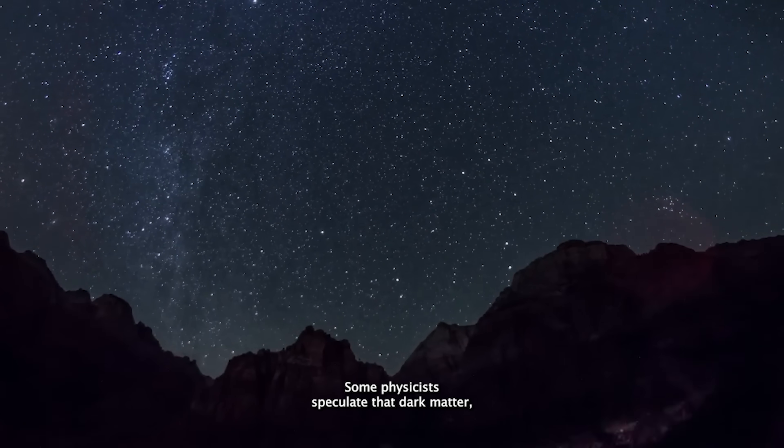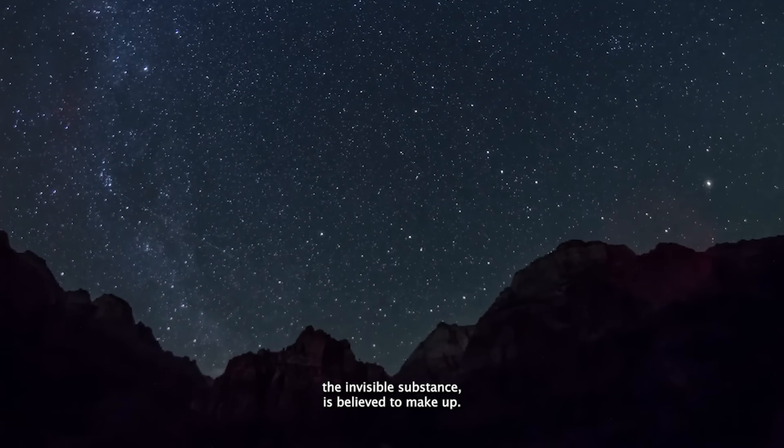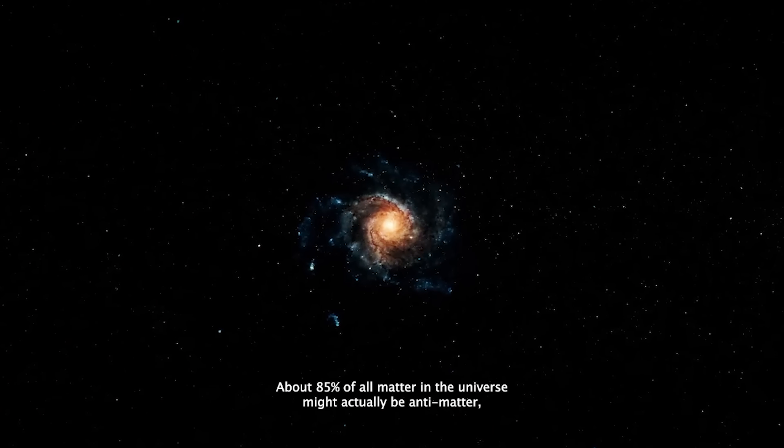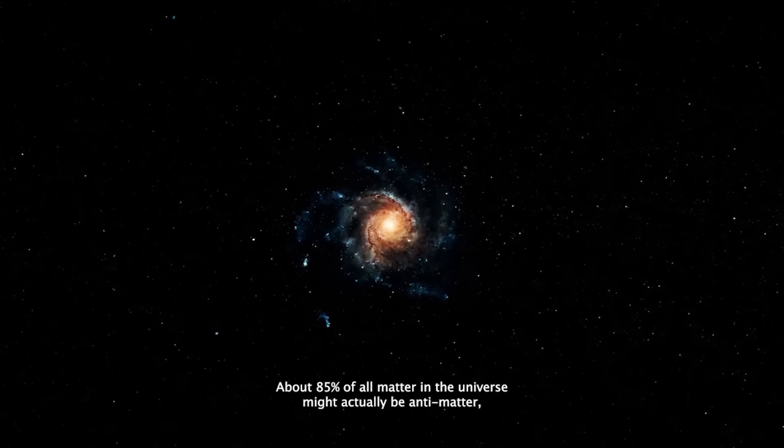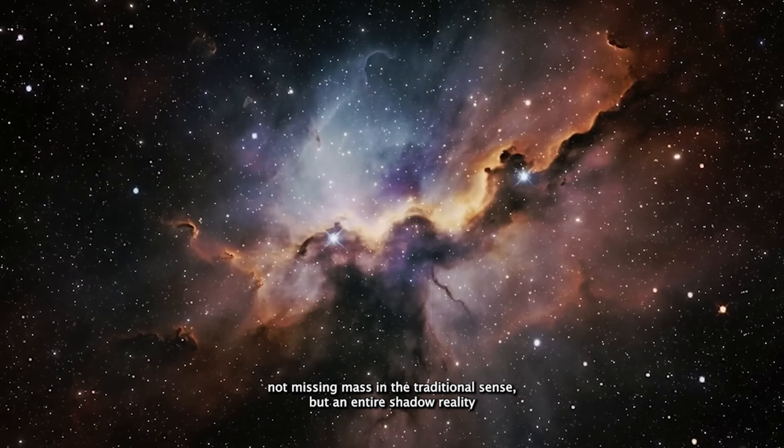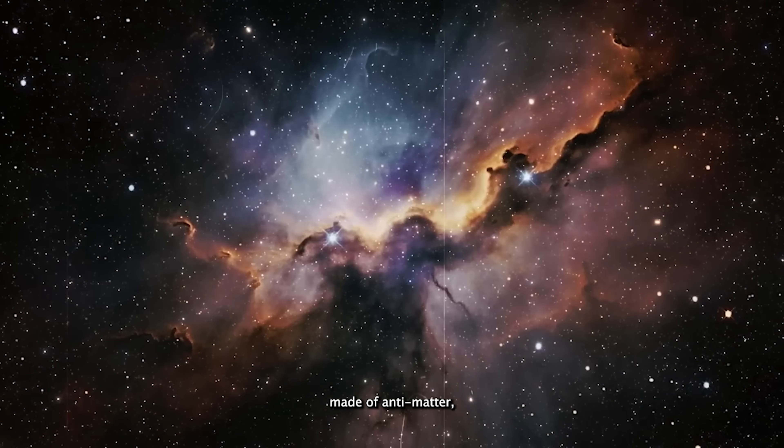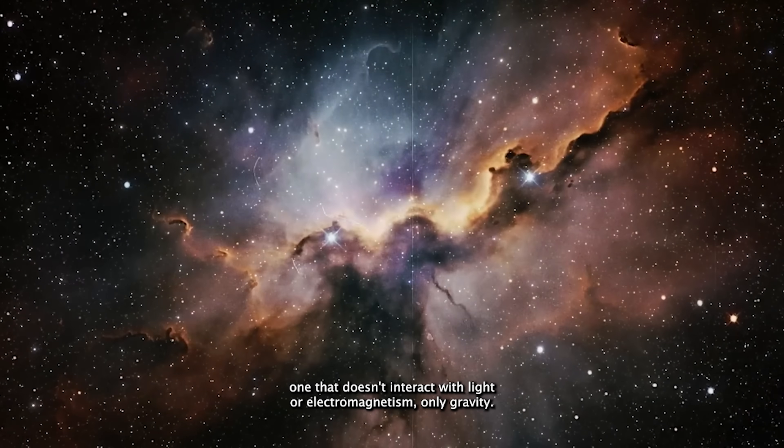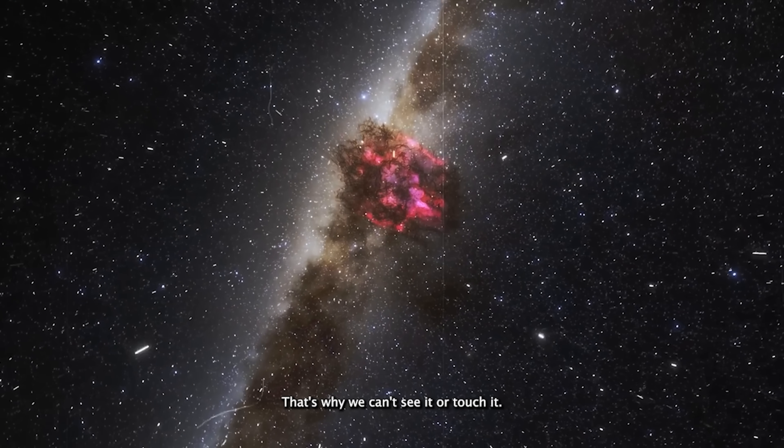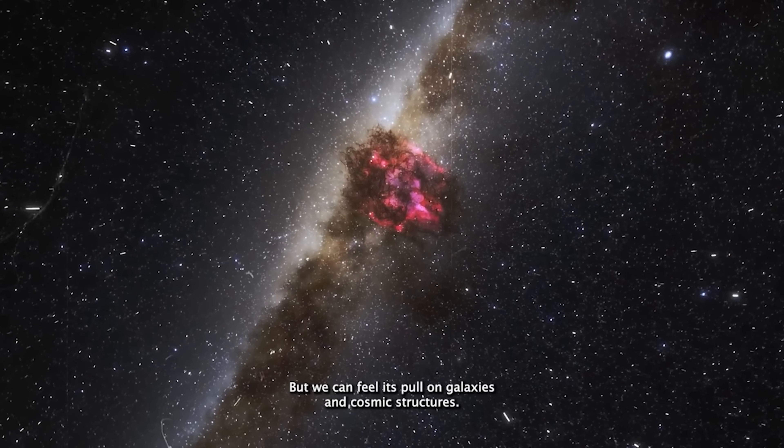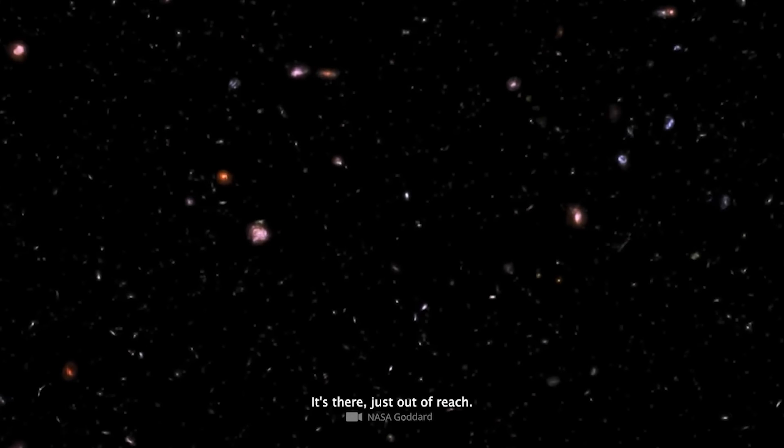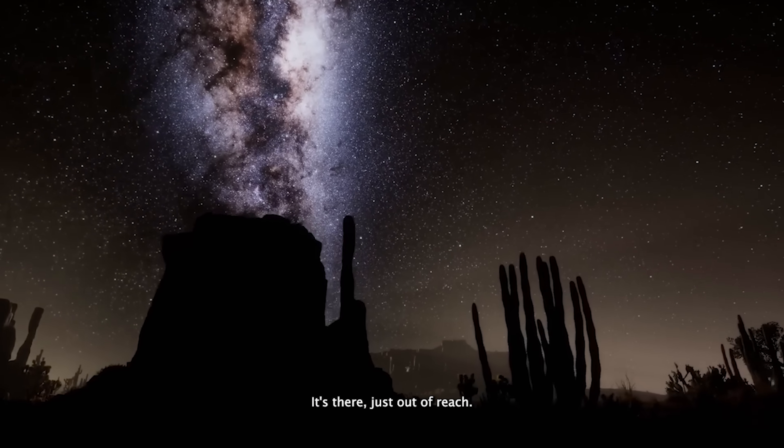But the idea goes deeper still. Some physicists speculate that dark matter, the invisible substance believed to make up about 85% of all matter in the universe, might actually be antimatter. Not missing mass in the traditional sense, but an entire shadow reality made of antimatter, one that doesn't interact with light or electromagnetism, only gravity. That's why we can't see it or touch it, but we can feel its pull on galaxies and cosmic structures.